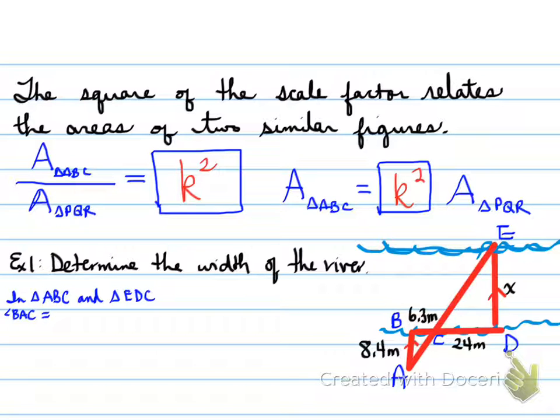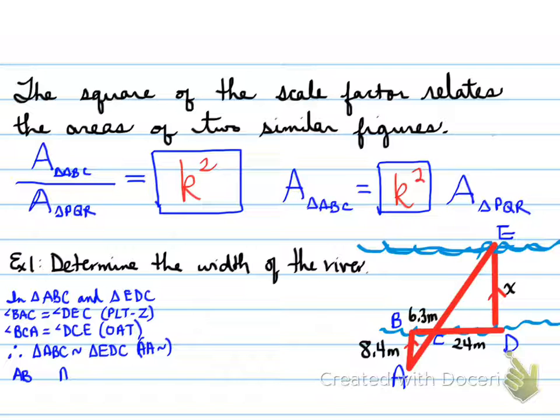In triangle ABC and triangle EDC, we know that angle BAC is equal to angle DEC because of Z pattern, PLTZ. Also, we know that angle BCA is equal to DCE because of opposite angle theorem, OAT. Because of that, we can prove that, therefore, triangle ABC is similar to EDC because of angle-angle similarity.